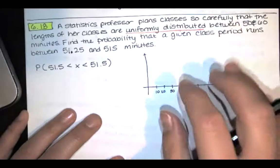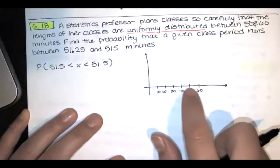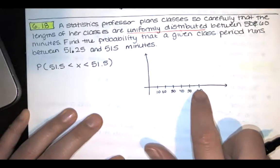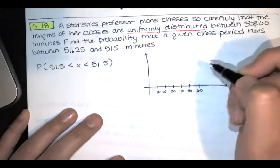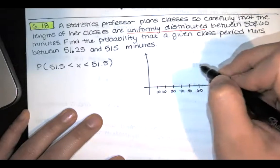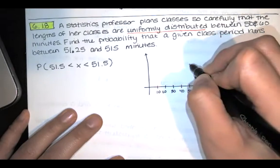So since it's a uniform distribution, since all of those possibilities are equally likely, the graph is rectangular. So this is going to have some height.